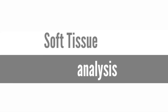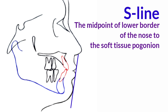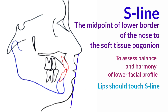For soft tissue analysis, Steiner's S line — the aesthetic plane — is a line connecting the midpoint of the lower border of the nose to the soft tissue pogonion, used to assess balance and harmony of the lower facial profile. Lips in well-balanced faces should touch this line. Lips located beyond this line tend to be protrusive. If the lips are positioned behind this line, the patient's profile is generally interpreted as concave.